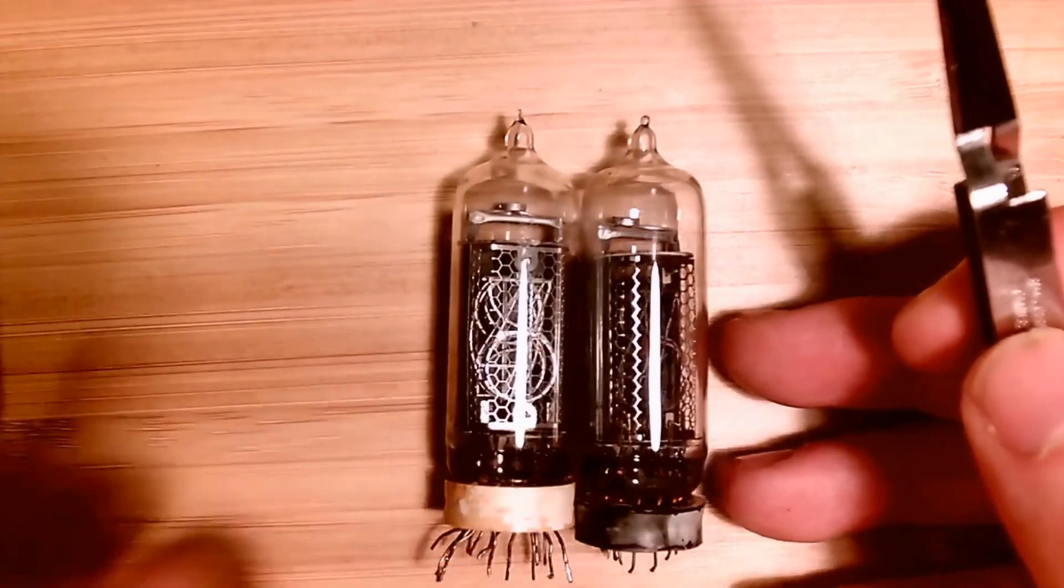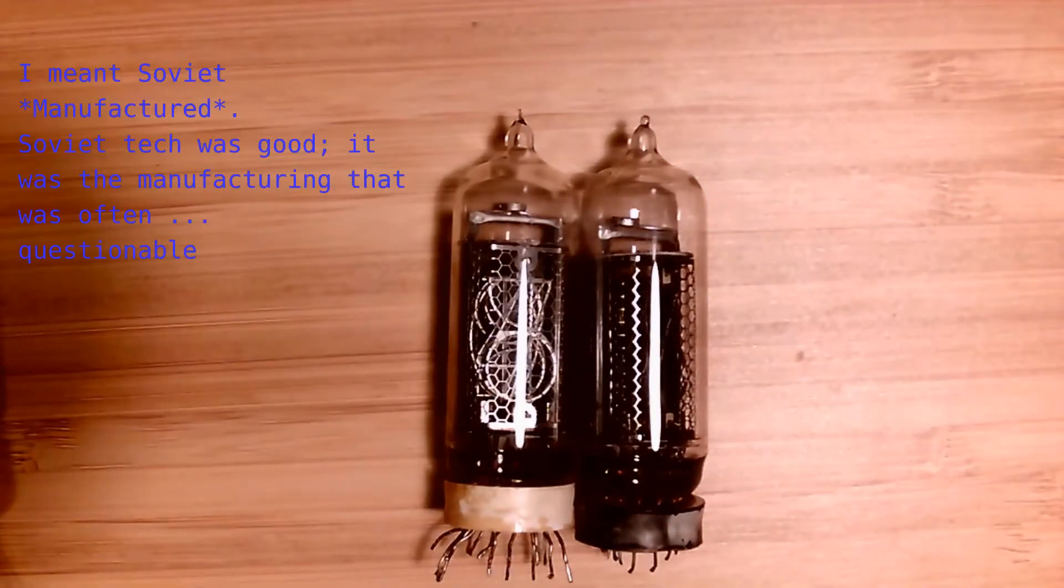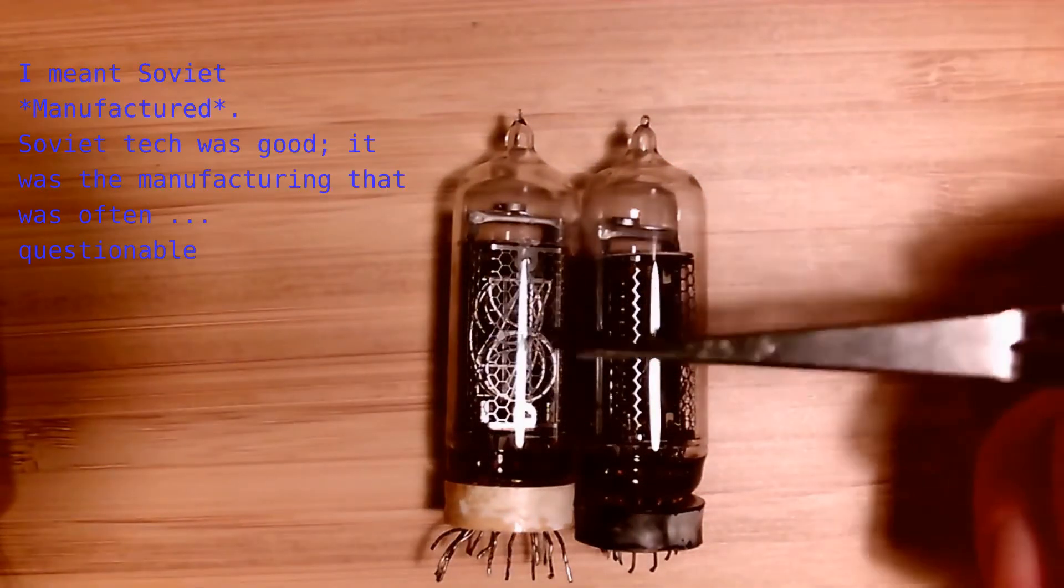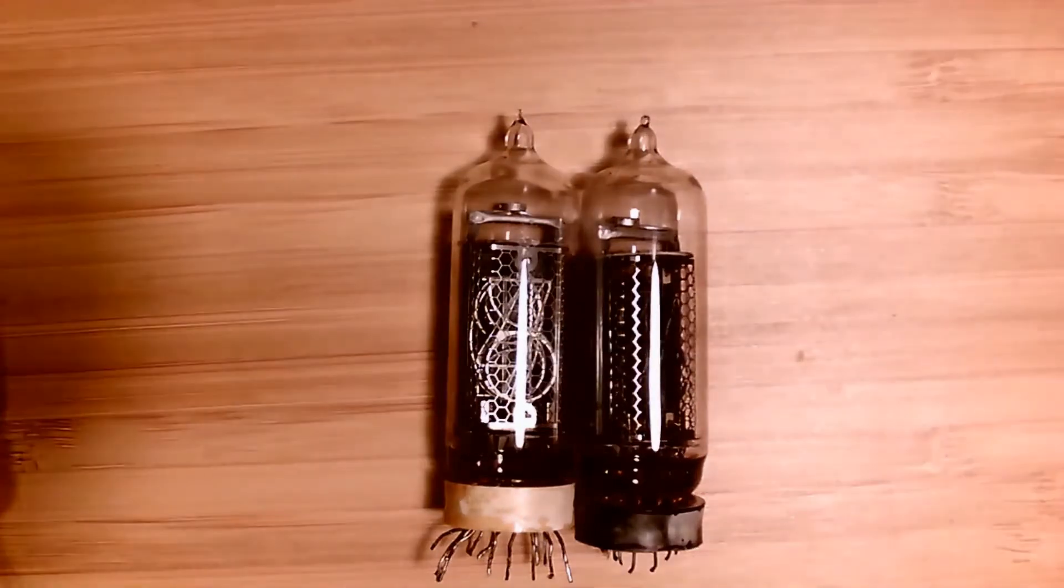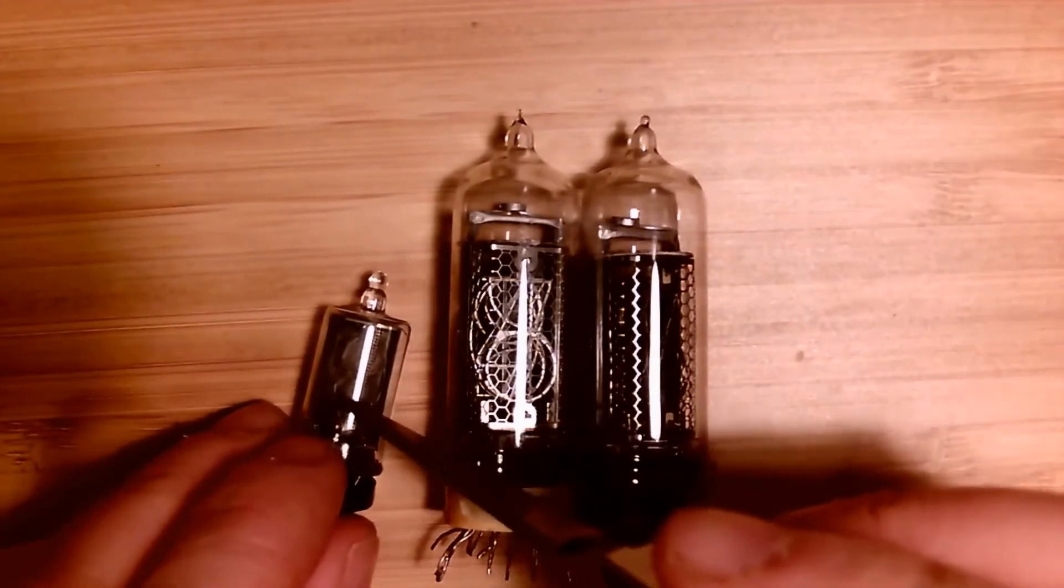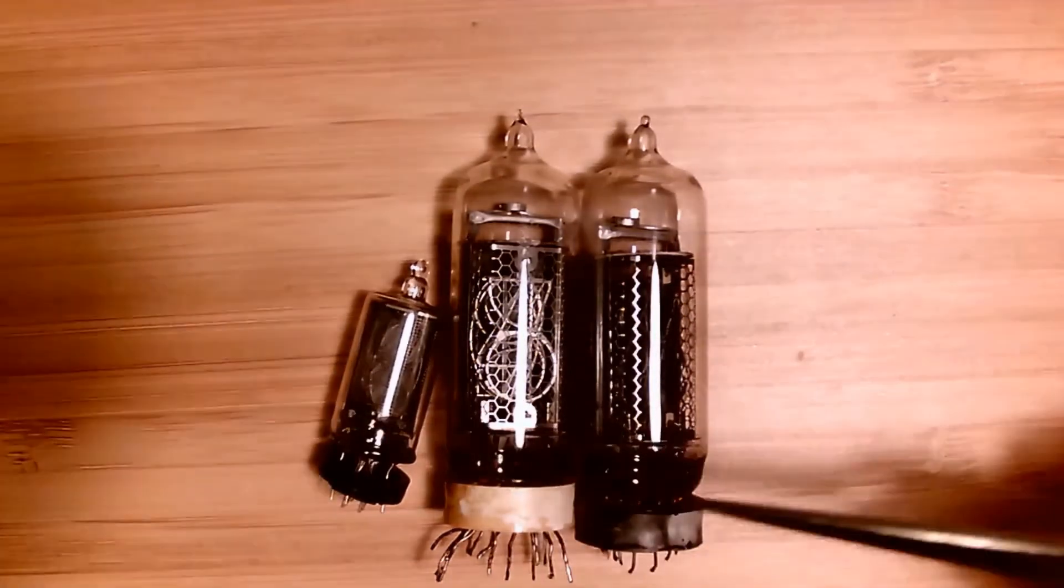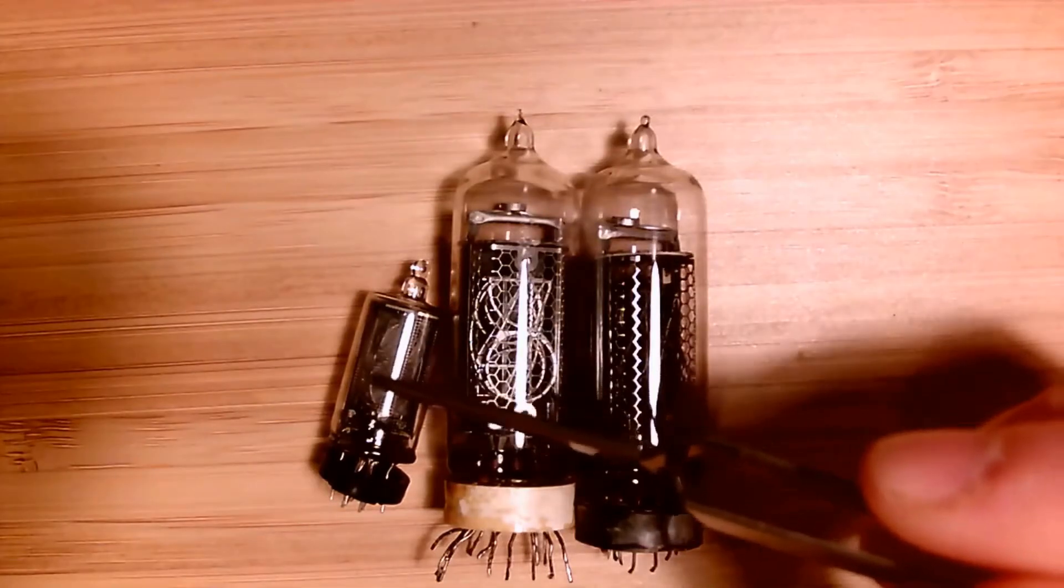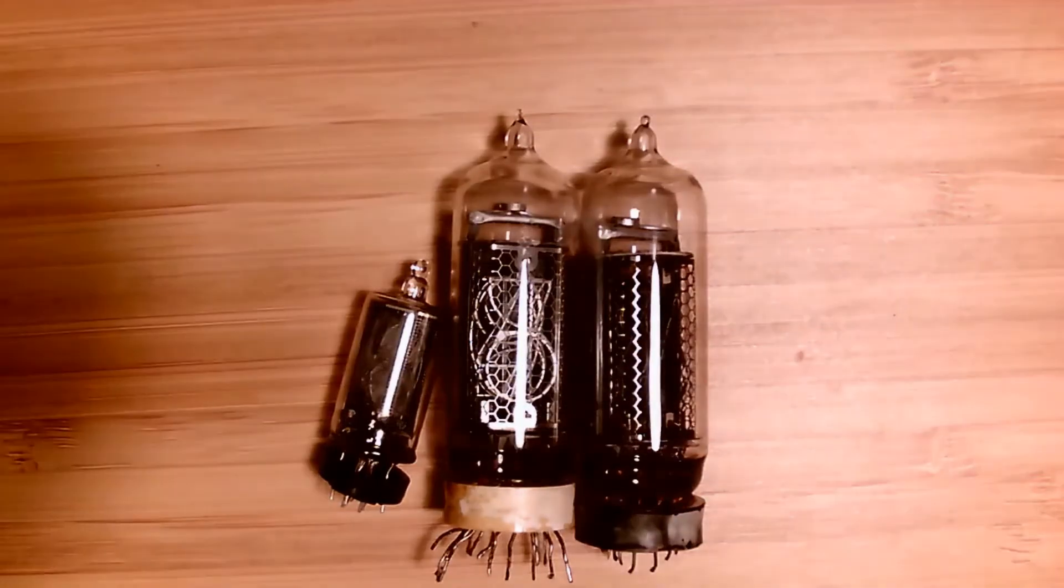It shows that they're Soviet tech. You can see the grid. See how thick the metal is here? Now compare it to this Burroughs tube. I think these were manufactured in America, maybe it was in Britain, I can't remember. Look how thin the wire mesh is, as opposed to this. The cathodes are pretty chunky as well.